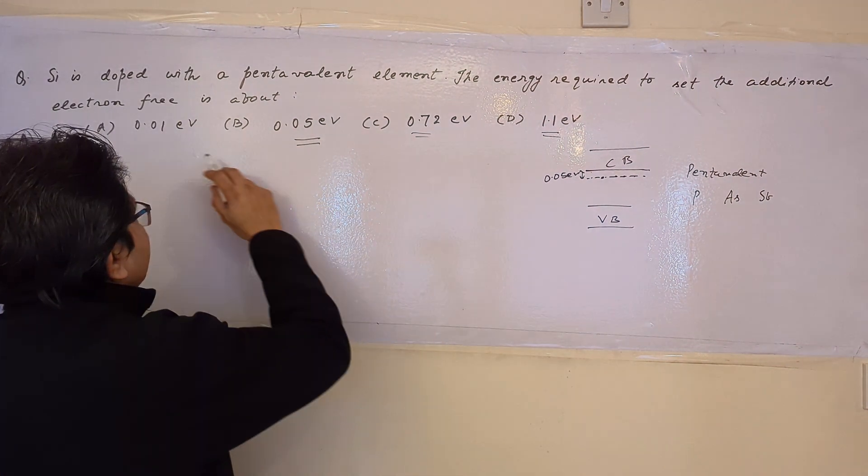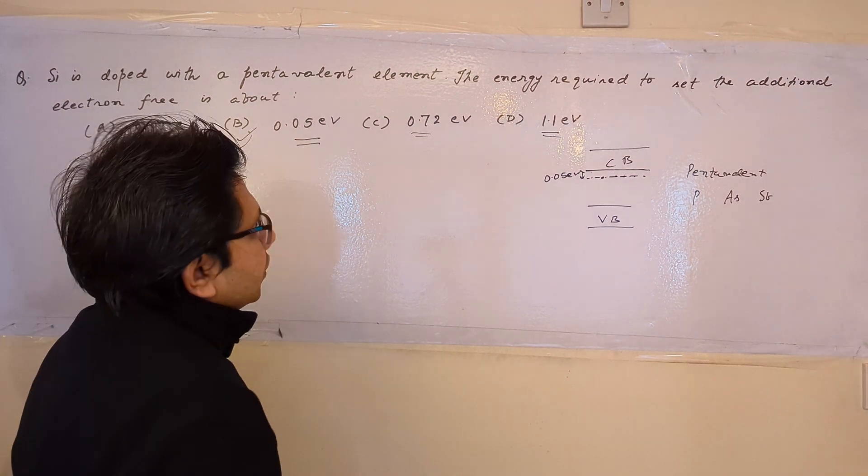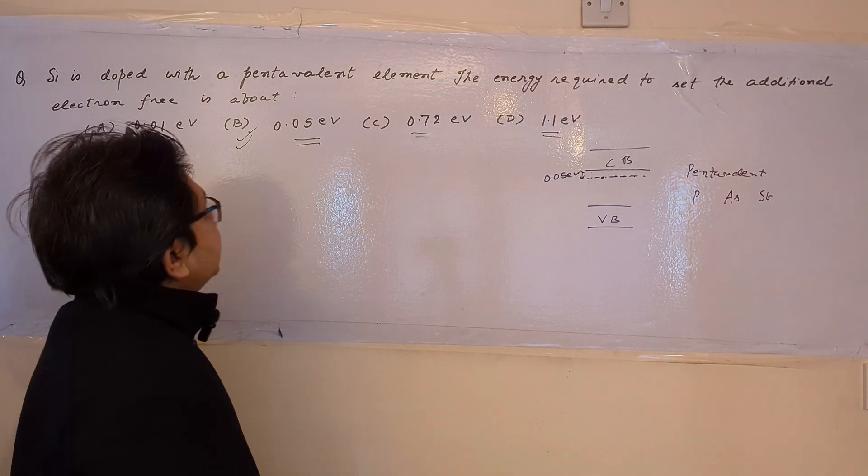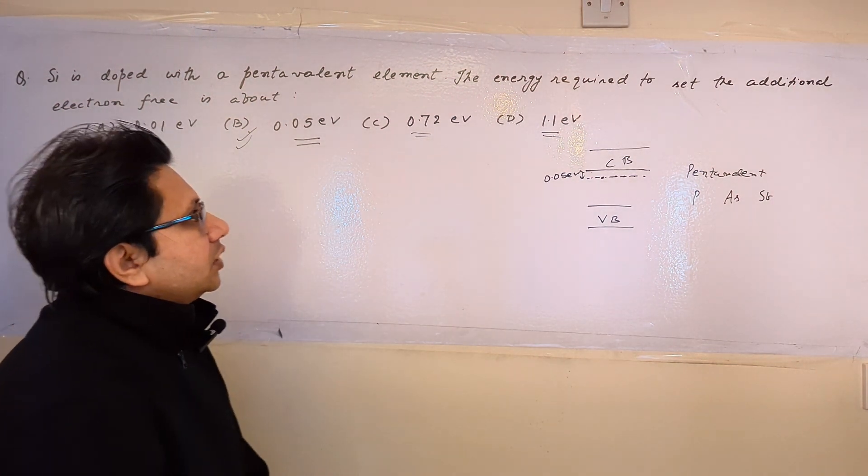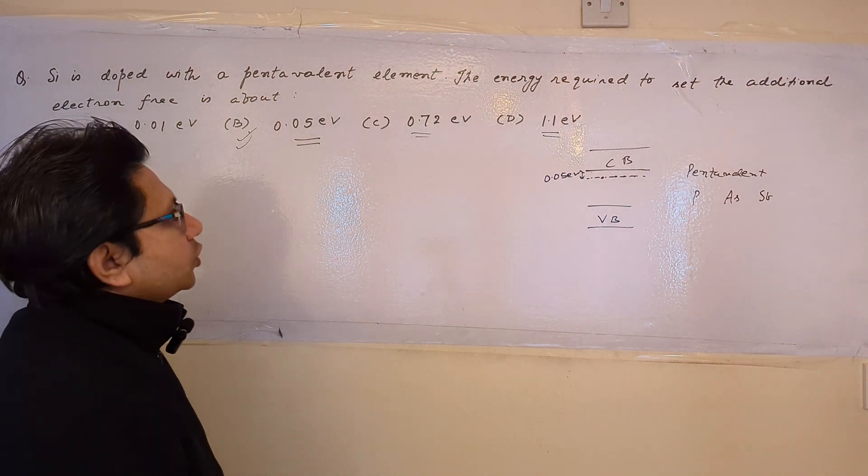Out of these, option B is correct. Here it is said that silicon has been doped with pentavalent elements, and how much energy is needed so that the additional electron is free, which means that it will be in the conduction band.